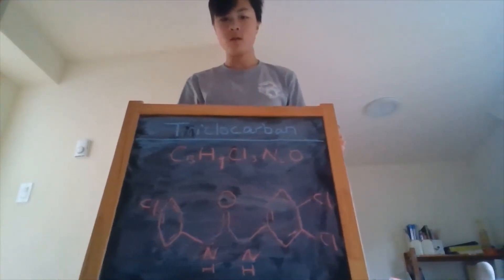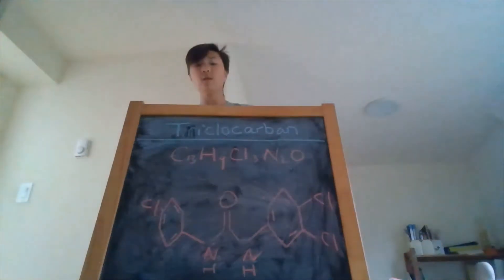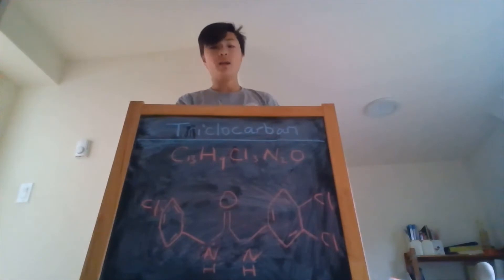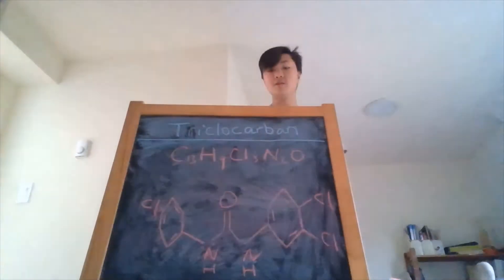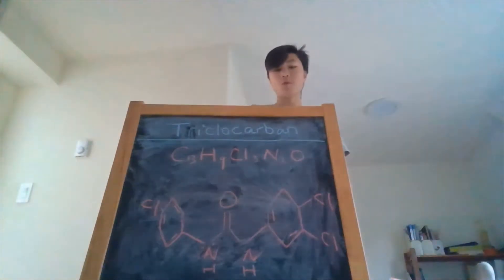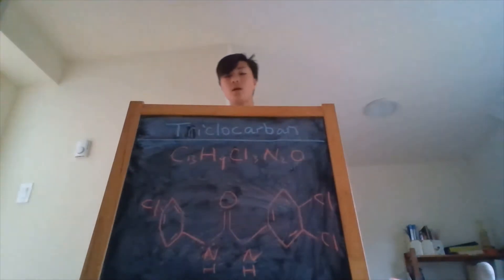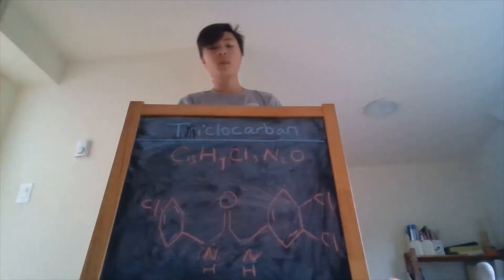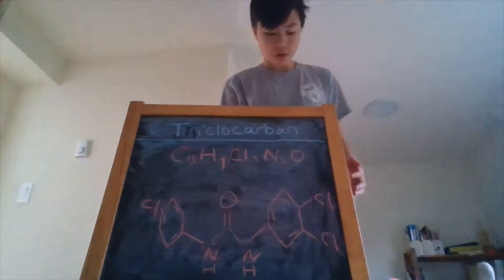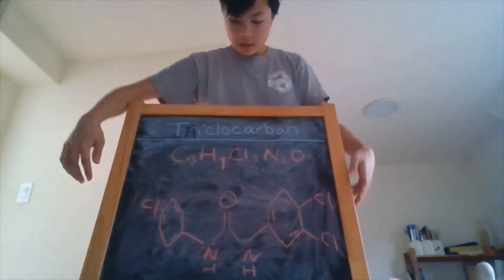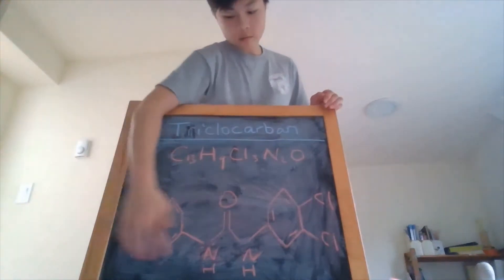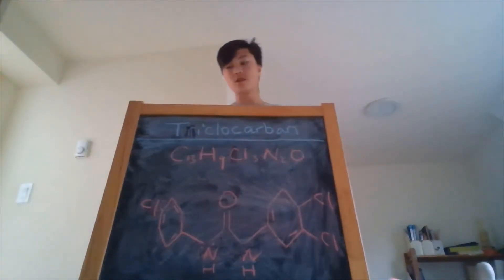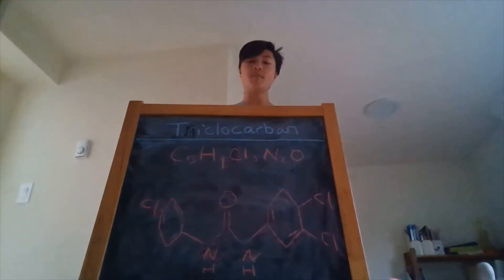So what is triclocarbon? Triclocarbon is a white powder-like compound that is insoluble in water. It is made out of 5 different elements. Its chemical formula is C13H9Cl3O2, and its chemical structure looks like this. As you can see, there are 2 chlorinated phenol rings, and this structure is very similar to the structure of compounds used in pesticides.